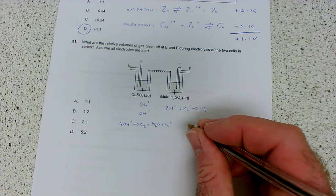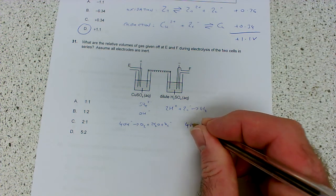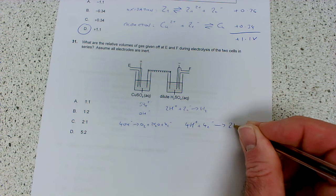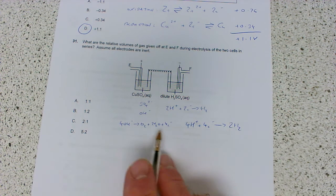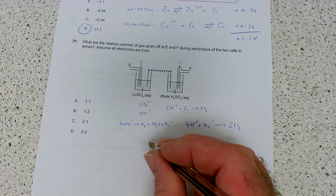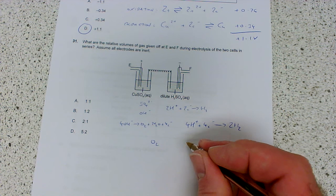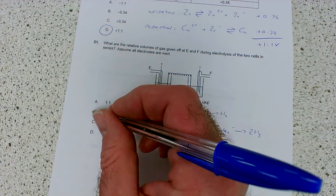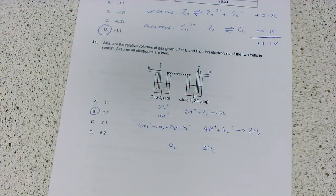So this becomes 4H+ + 4e- gives 2H2. The ratio of gases produced is 1O2 to 2H2, so the answer is B, a 1 to 2 ratio.